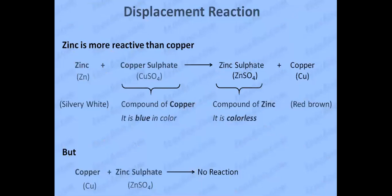Today we discussed the fourth chemical property of metals: metals reacting with salt solutions of other metals, known as displacement reactions. We now understand that zinc placed in copper sulfate solution forms zinc sulfate (colorless solution) with copper displaced as a red-brown metal. However, copper is less reactive than zinc, so when copper is added to zinc sulfate solution, there will be no reaction, no change, and nothing will be formed.